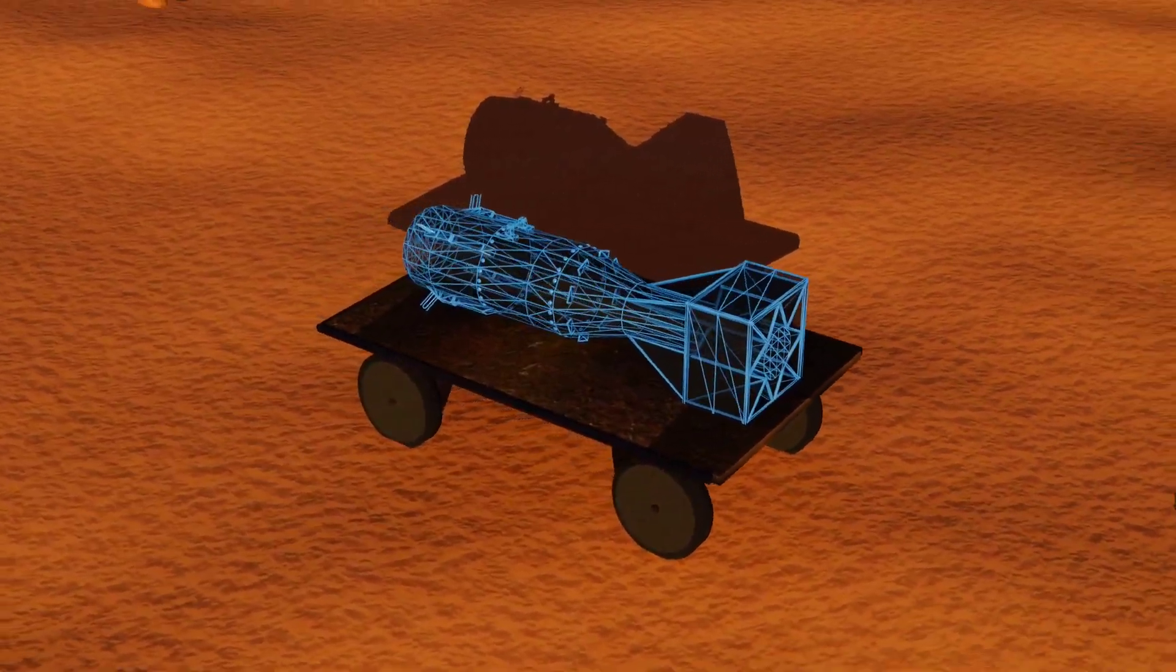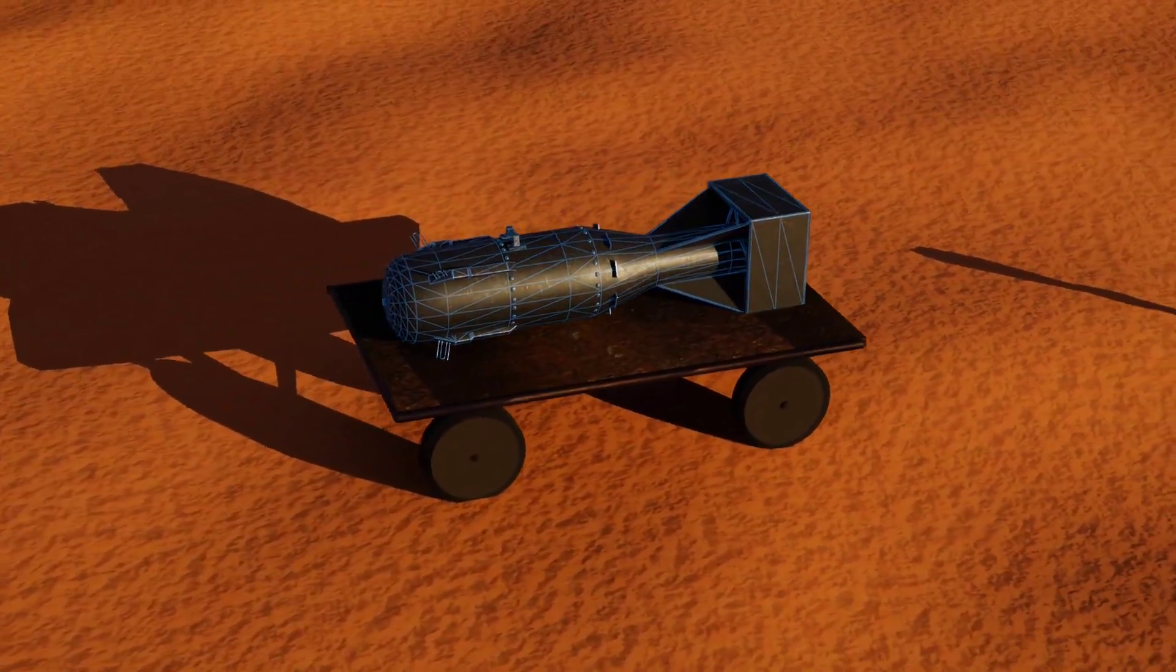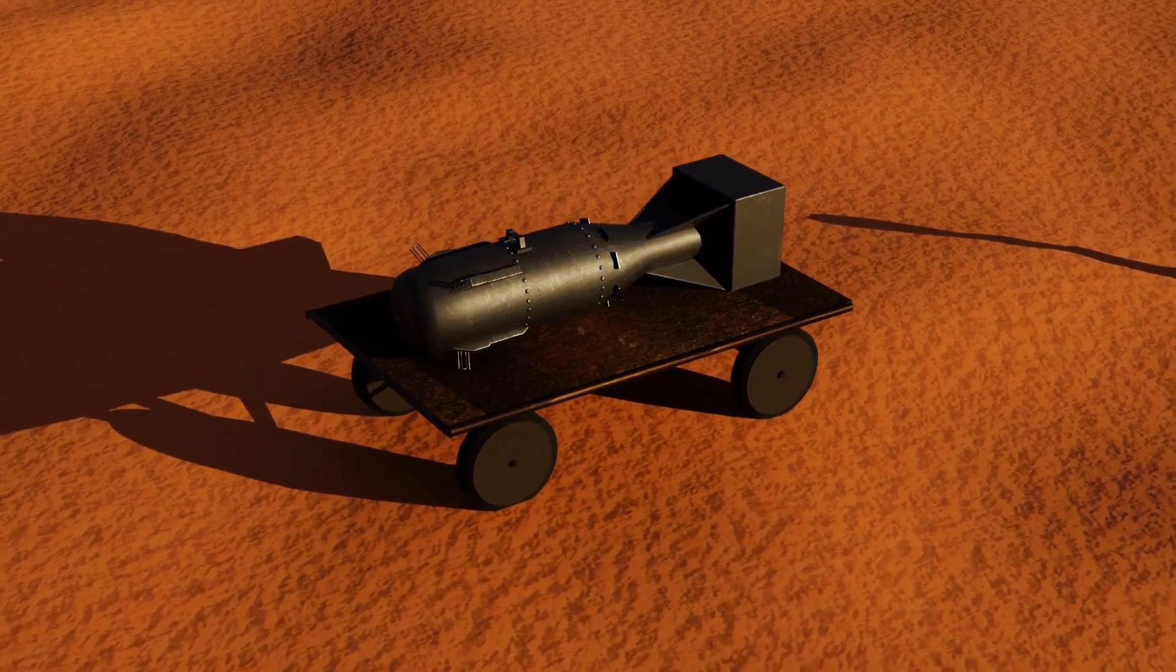This weapon, called Little Boy, was dropped on Hiroshima, marking the first time a nuclear weapon was ever used in history.